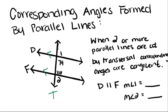So this angle formed by the first line and the transversal is congruent to the angle formed by the second line and this same transversal. Just like this one right here is congruent to here. And the same goes for the angles on this side — this angle is congruent to this angle, and this angle is congruent to this angle.